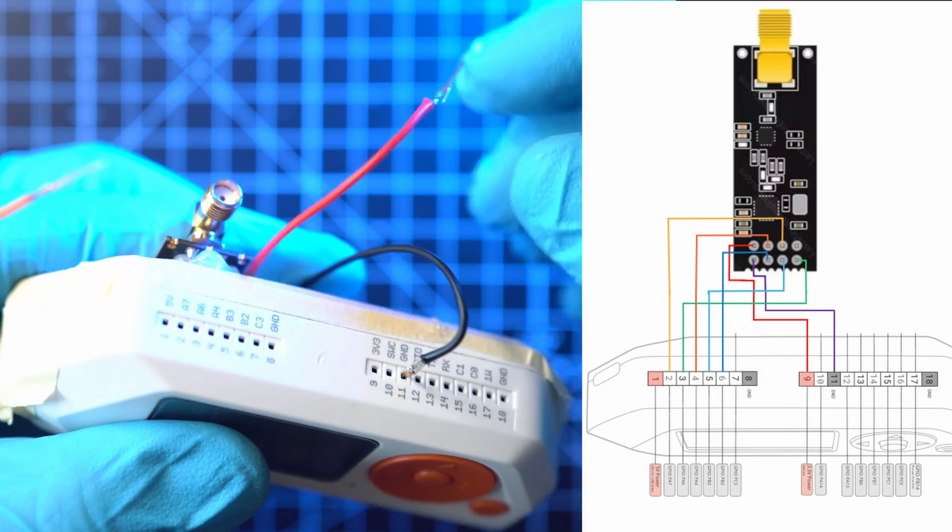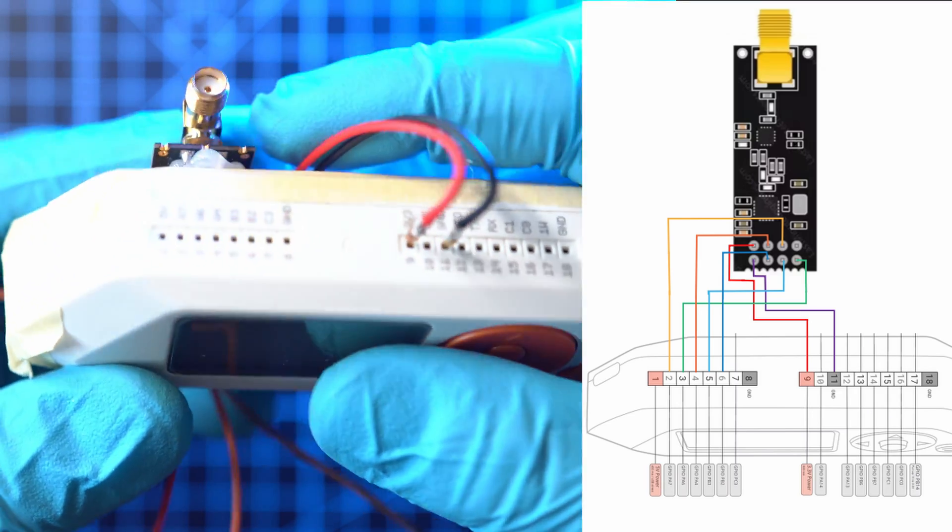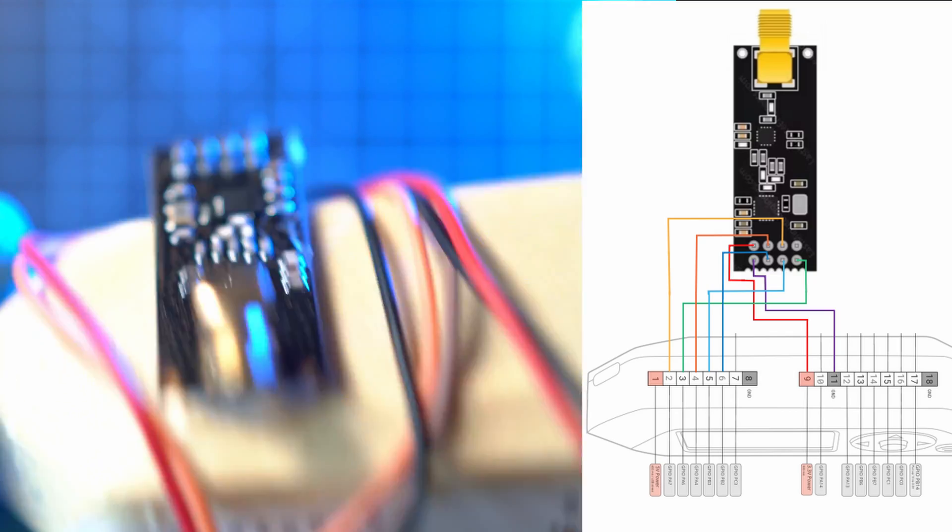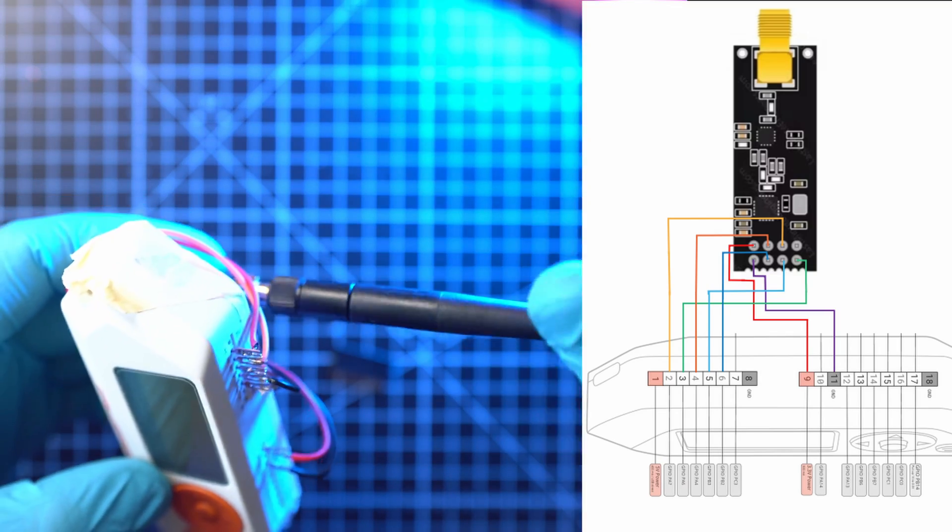3 volts and ground. Our pins 9 and 11 and 5 COM wires are connected from pin 2 to pin 6 on Flipper. Just like on the diagram.